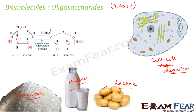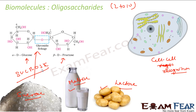Oligosaccharides are linked by a glycosidic linkage. This example comprises one glucose and one fructose — this is sucrose. If you do hydrolysis of sucrose you will get one glucose and one fructose. We will talk about these in detail when we discuss sucrose specifically.